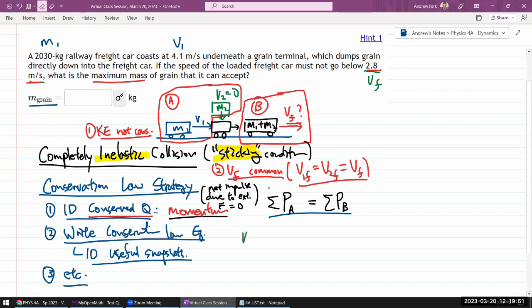I have momentum of the car. So let me write down M1 V1 from definition of momentum. And I do have momentum of the grain, which, because of its zero velocity, it'll be zero. But let's write it down anyway. So it's going to end up in zero. That's fine. And in snapshot B, I have the total momentum. Let's write the combined masses as one. Since they move together, I can kind of treat them as combined mass times V final.